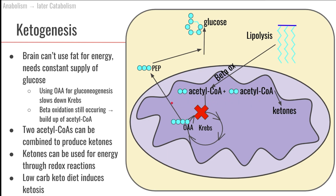The ketones are formed by taking two acetyl-CoA molecules and going through a series of chemical reactions. This is relevant to ketogenic diets, which are widely discussed in the literature and popular media. These are diets that restrict carbohydrates in order to force your body into a state where it is producing ketones.